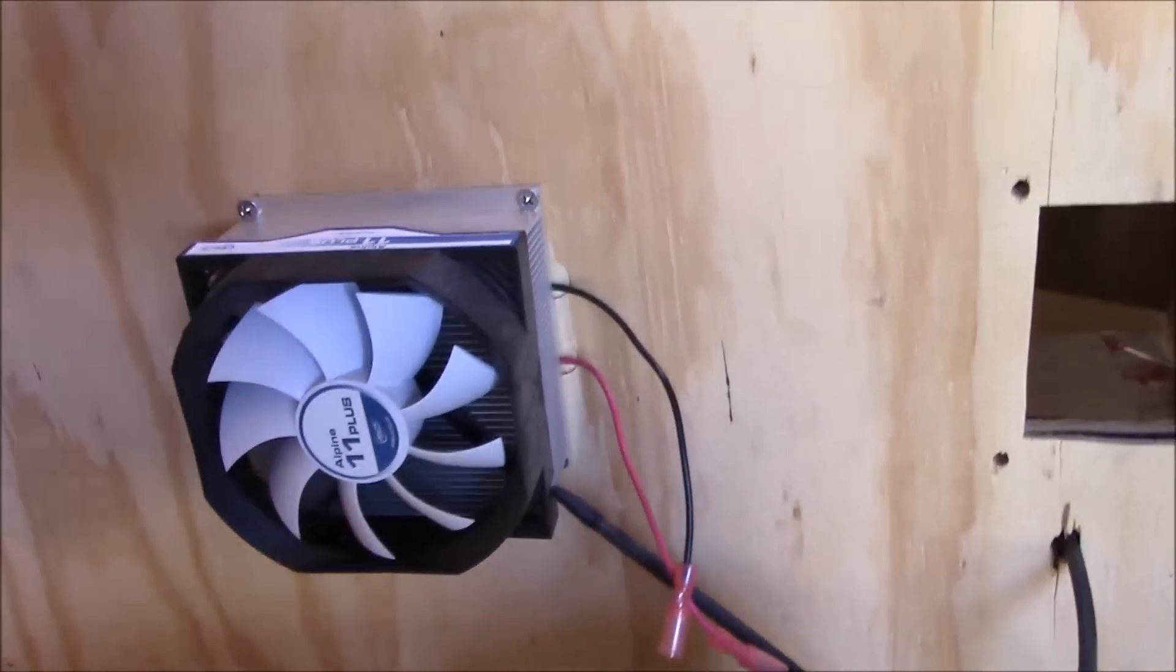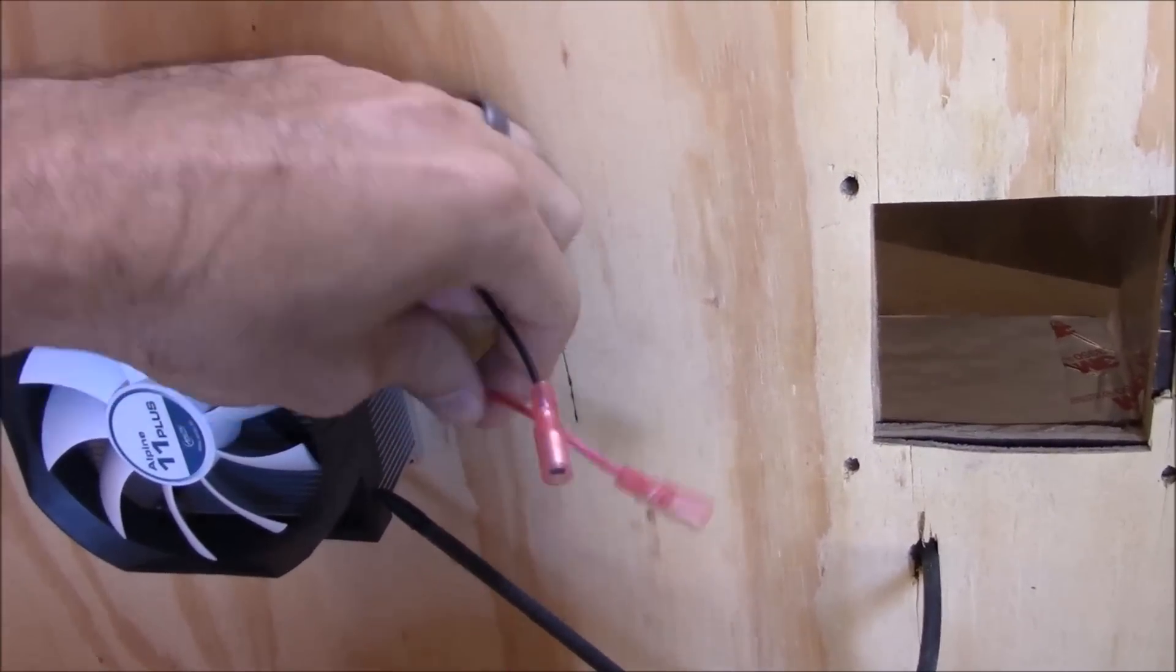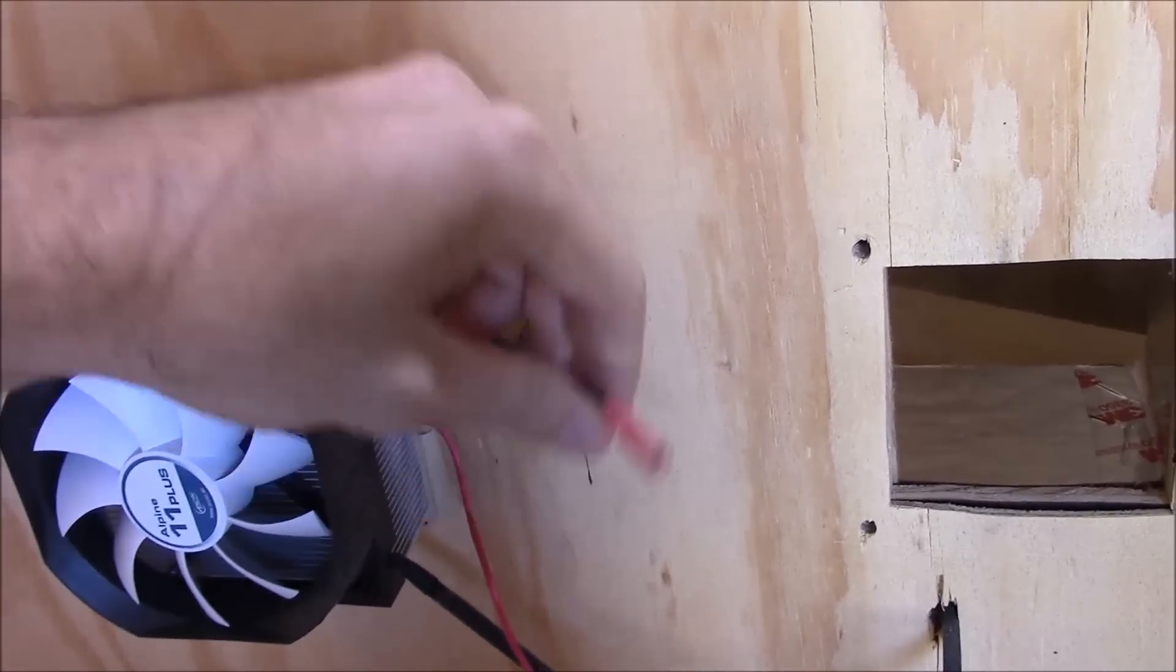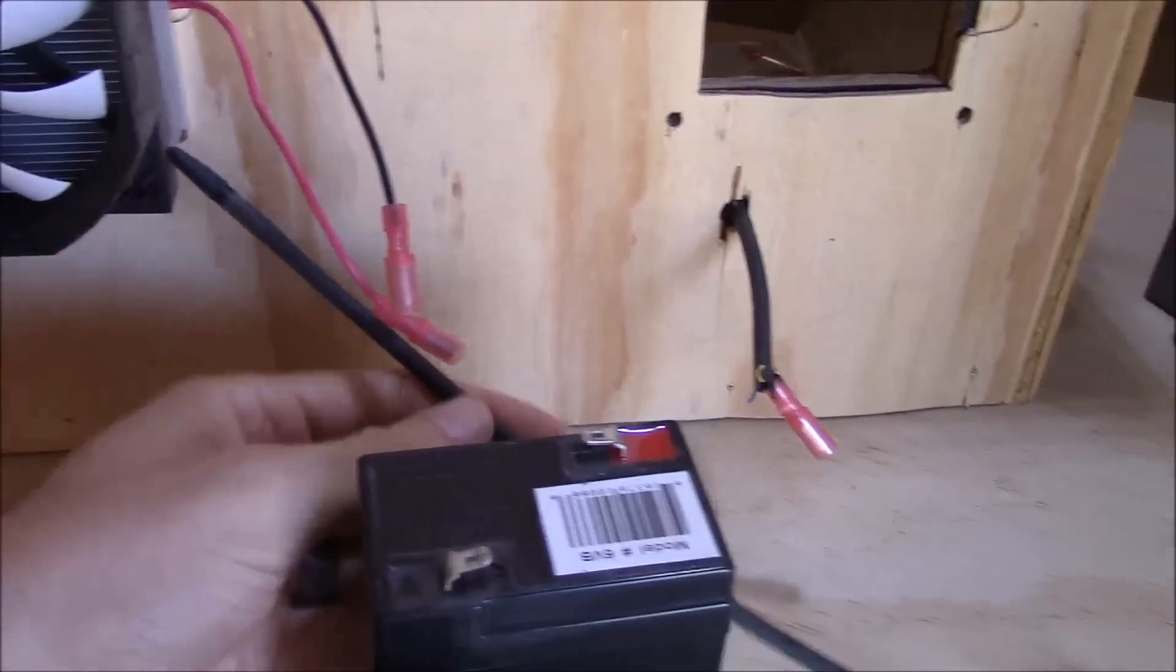Now in direct current wiring or DC wiring, you're only going to have to ever worry about two wires. There's a black and a red or a positive and a negative. The negative is black, positive is red.